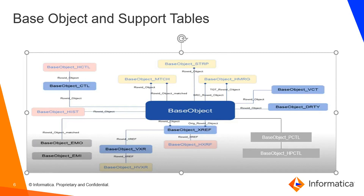In addition, from MDM 10.3 onwards the PCTL table was introduced — called the pending control table. This table takes information about records which override trusted values and are waiting for a merge task action. It contains all the columns present in the control table plus an additional column called interaction ID. If history is enabled for the base object, we also have the HPCTL table. In the demo I will be showing all these tables.